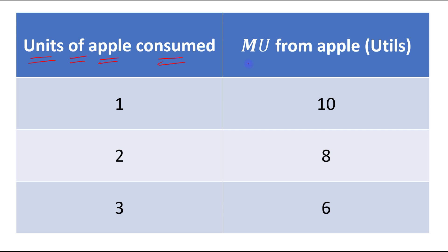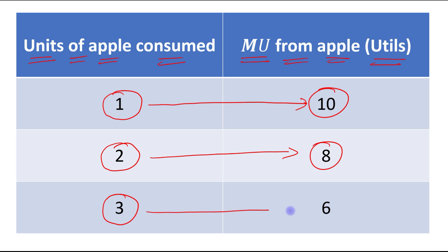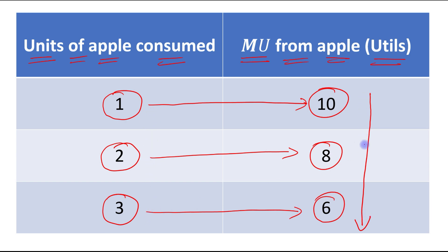When the consumer consumes the first unit of apple, he gets a satisfaction of 10 utils. When he consumes the second unit, he gets 8 utils. When he consumes the third unit, he gets 6 utils. So basically, the law of diminishing marginal utility states that as the consumer consumes more and more units of a good, each successive unit gives him lesser utility. Marginal utility goes on diminishing.